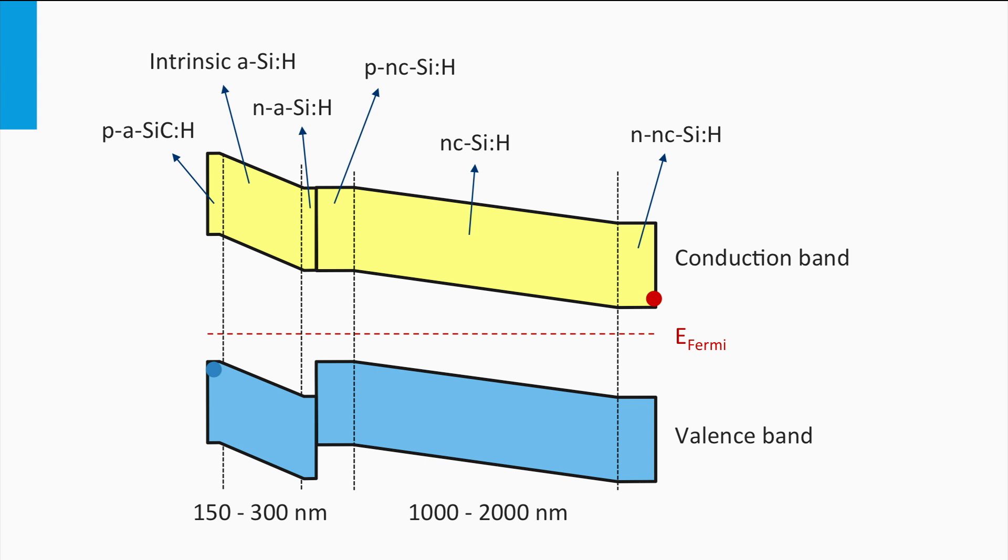The total current density is equal to that of the junction with the lowest current density. It means that in an optimized multijunction cell, all current densities in the various subcells have to be matched to achieve the best spectral utilization.